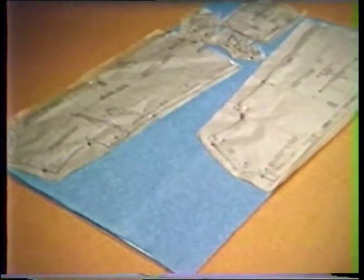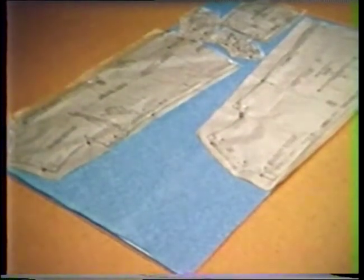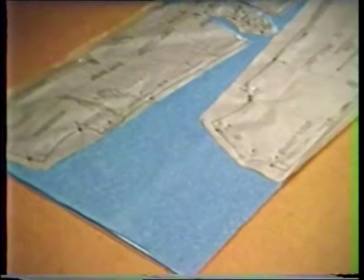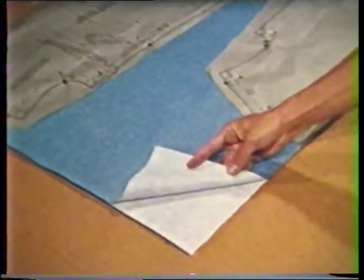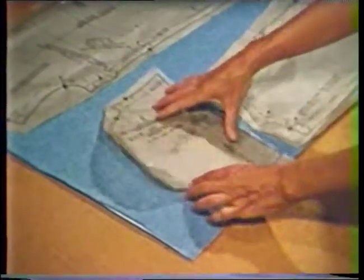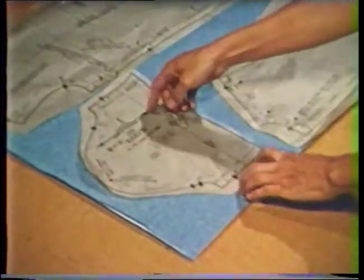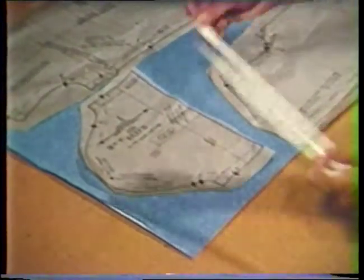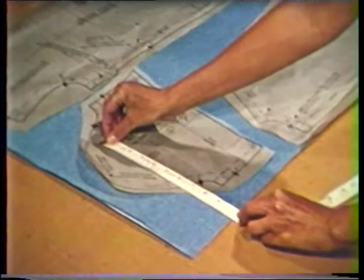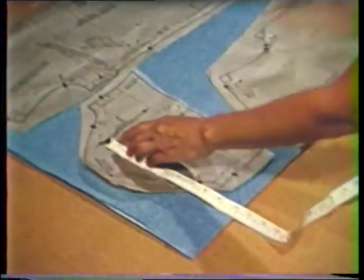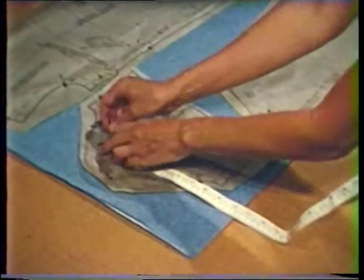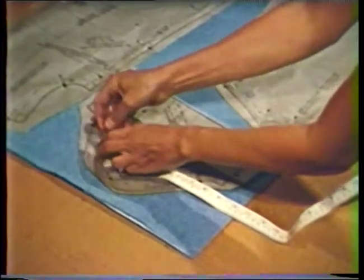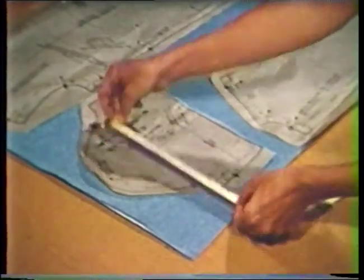Refer to the instruction sheet for a suggested layout. When using pile or napped fabrics, all pattern pieces must be placed in the same direction. Fabric is usually folded with wrong sides together. Lay each pattern piece so the marked grain line on the pattern runs parallel to lengthwise grain or to the selvage edge on woven fabric. Measure from the grain line marking to the selvage or straight grain fold, and then pin the pattern at each end of the grain line marking.